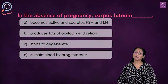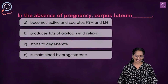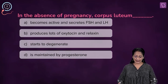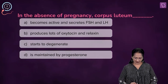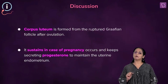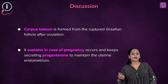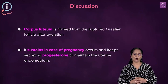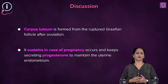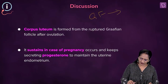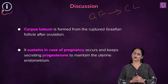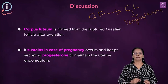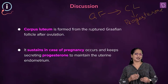A fill-in-the-blanks question. In the absence of pregnancy, corpus luteum: A — becomes active and secretes FSH and LH; B — produces lots of oxytocin and relaxin; C — starts to degenerate; D — is maintained by progesterone. Corpus luteum is what the Graafian follicle gets transformed into after ovulation. When there is a high level of luteinizing hormone, the Graafian follicle ruptures, releases the secondary oocyte, and gets converted to the corpus luteum — the yellow structure — which secretes progesterone, also called the pregnancy hormone.